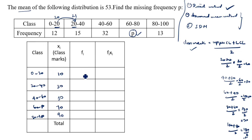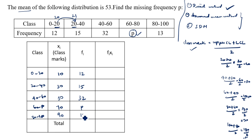Now the frequencies fi: for 0–20 it is 12, for 20–40 it is 15, for 40–60 it is 32, for 60–80 it is p, and for 80–100 it is 13.